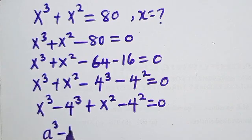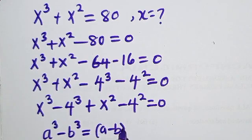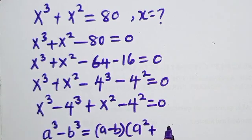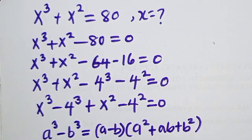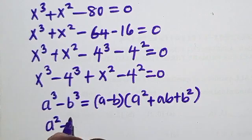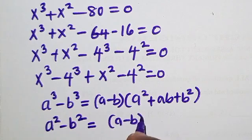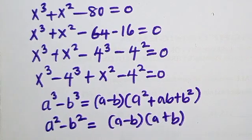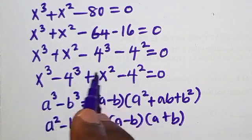We know that a³ minus b³ gives us (a - b)(a² + ab + b²). And we also know that a² minus b² equals (a - b)(a + b) — that is the difference of two squares. We are going to use both of those identities here.